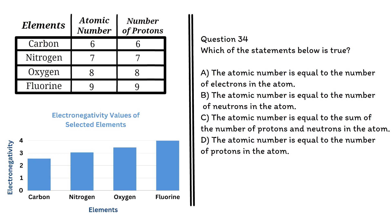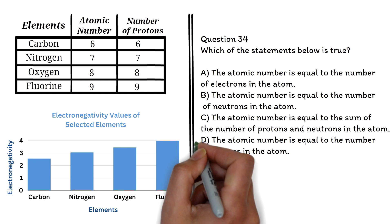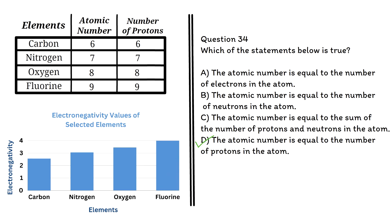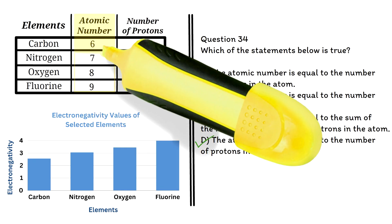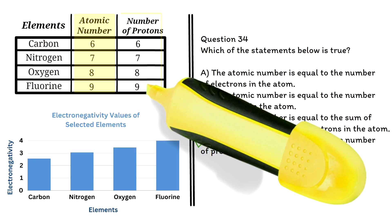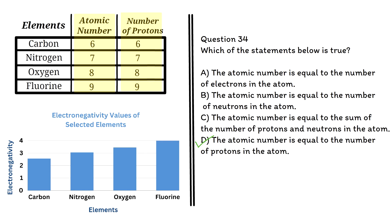Some GED science questions require the use of multiple data points, like two graphs or a graph and a table combined to get your answers. That's what we are looking at here. The correct answer is d: the atomic number is equal to the number of protons in the atom. We can see from the table that the atomic number is always the same as the number of protons.